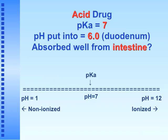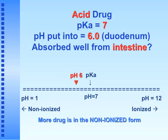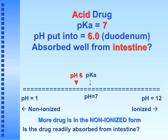Problem 2: acidic drug, pKa = 7, placed into the intestines (duodenum) at pH ~6. The pKa is still 7, and the environmental pH of 6 means more drug is in the non-ionized form. Is the drug readily absorbed from the intestine? Yes, although not as much as from the stomach since the ratio is closer to 50-50.